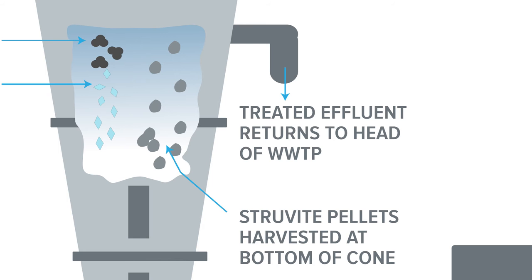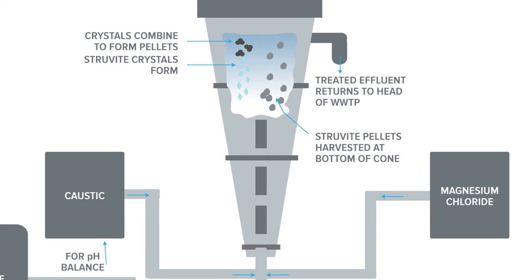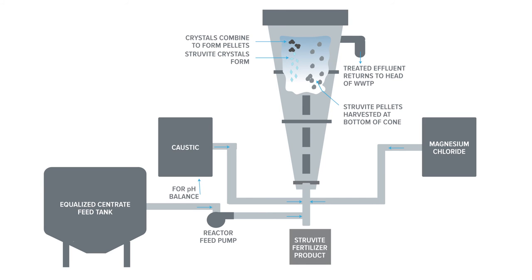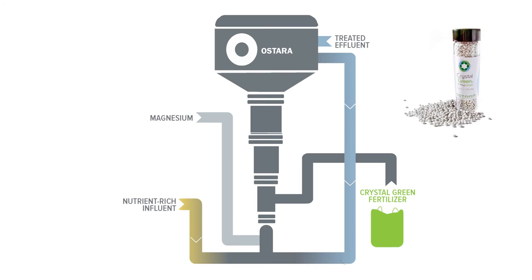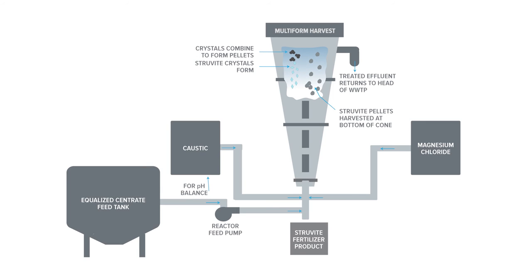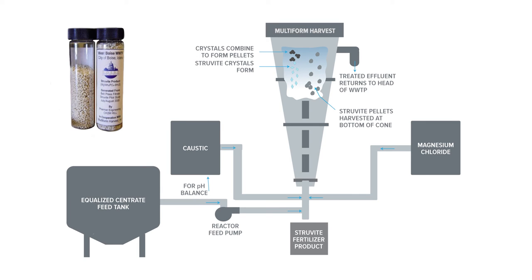The low-phosphorus effluent exits the top of the reactor, and the phosphorus, as struvite, comes out the bottom. Depending on the manufacturer, an internal recycle might be required. The resulting pellets from the Ostara process are ready to sell — they call it Crystal Green fertilizer. From Multiform Harvest, the finished product is a raw form of struvite with a sandy consistency, which gets processed into fertilizer or other products off-site on the secondary market.